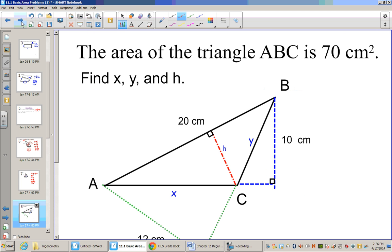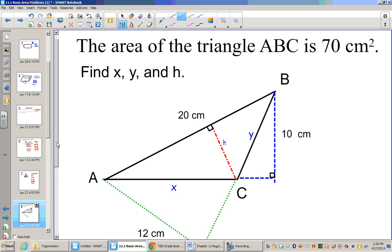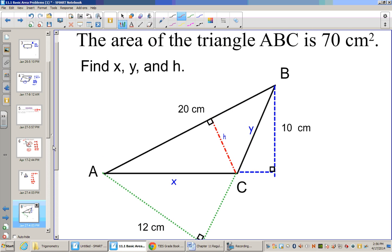Alright, let's try another one. This one says the area of the triangle ABC. So this black triangle is 70 centimeters squared. They want us to find x, y, and h.